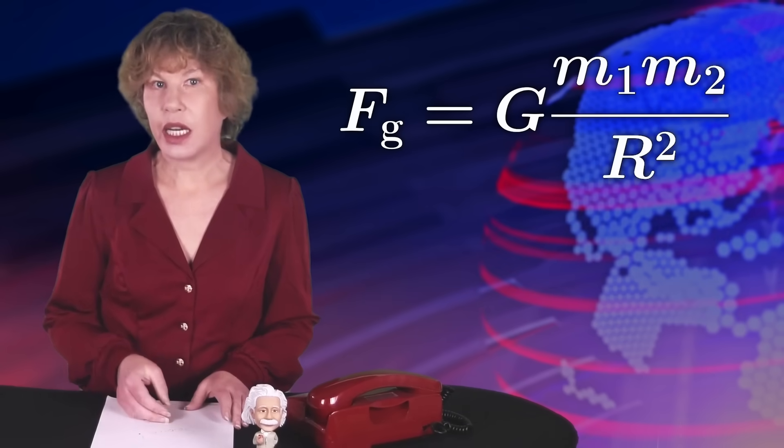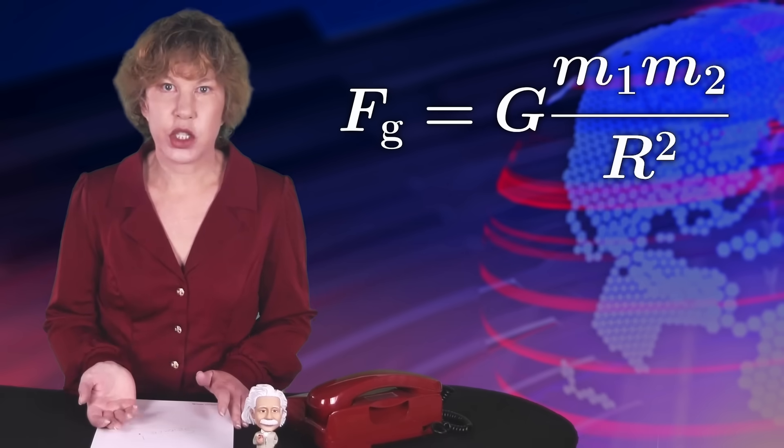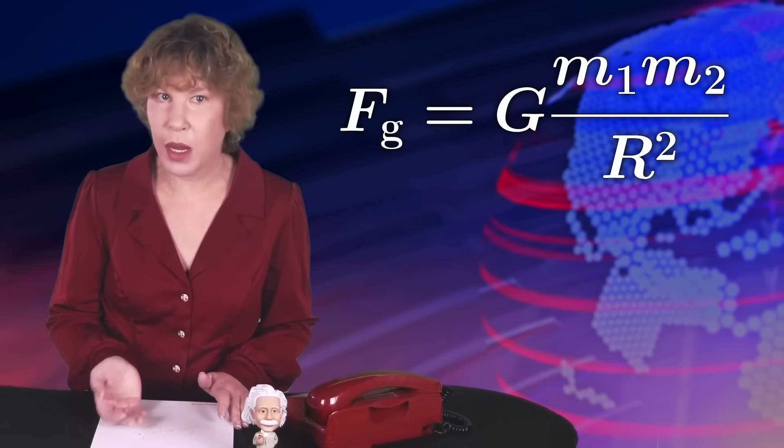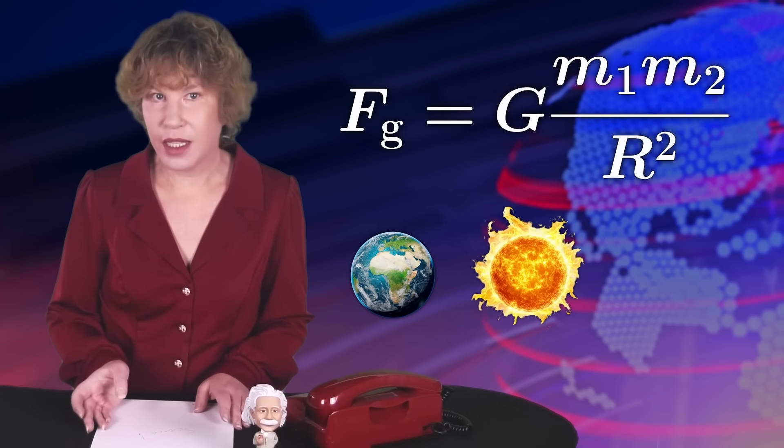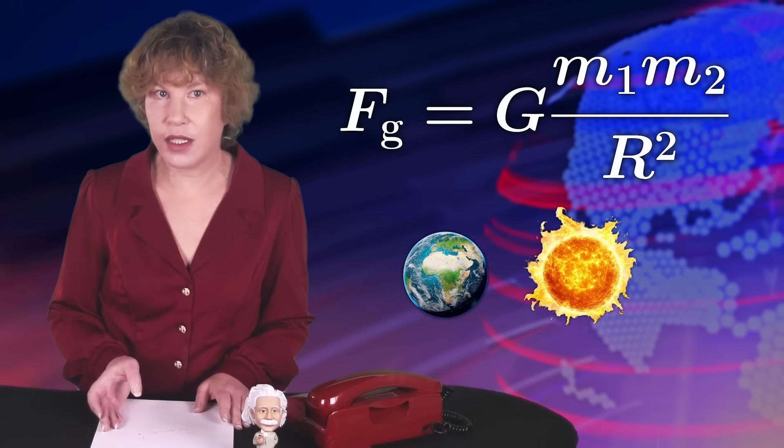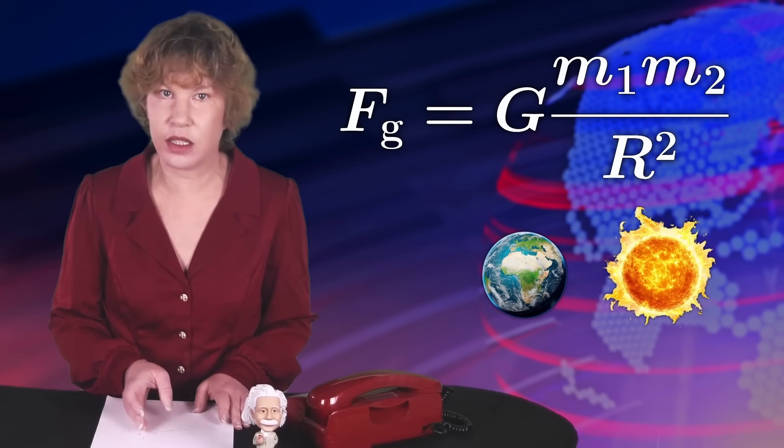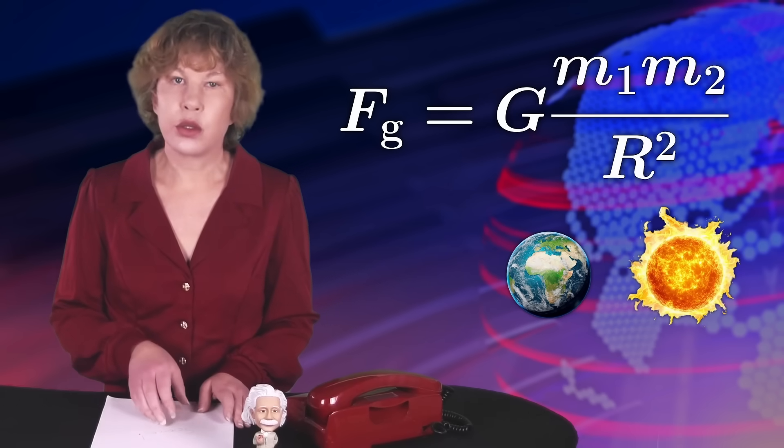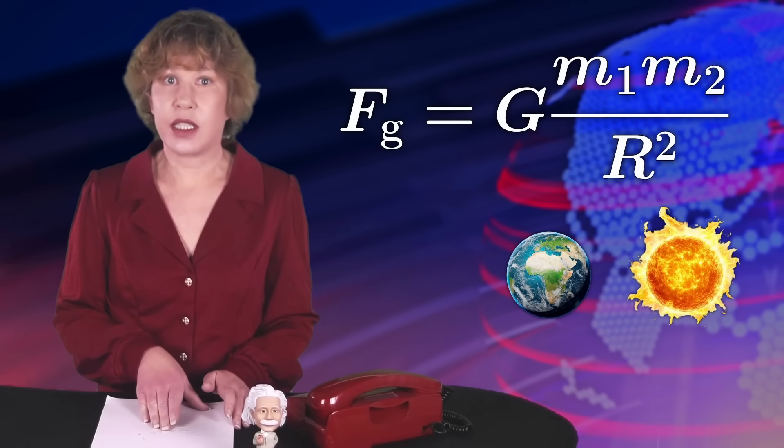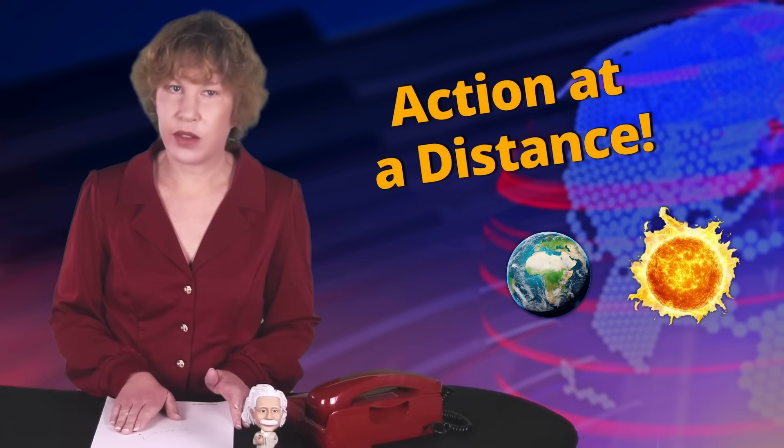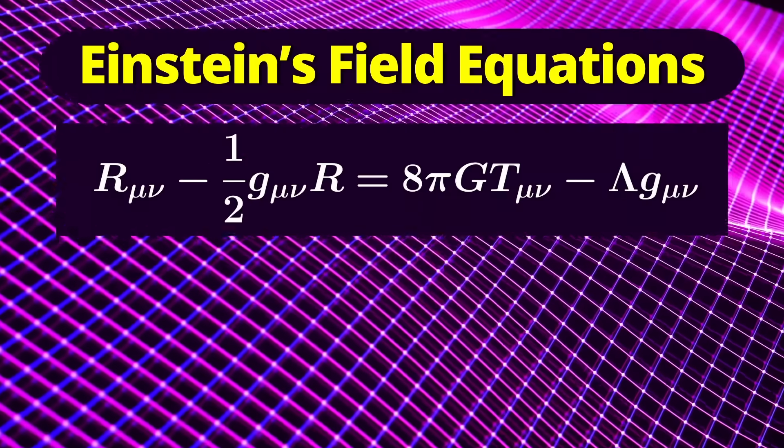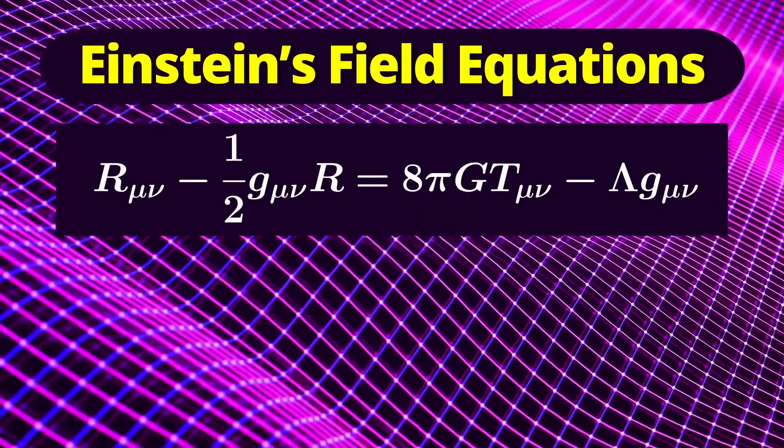Newtonian gravity is not local. This bothered Newton a lot back then. If you take Newton's law of gravity with the gravitational force proportional to the mass divided by the square of the distance, then if you move the mass, the distance increases and the force changes instantaneously everywhere. Newton was greatly bothered by this. He called it action at a distance.